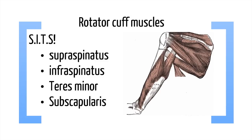The best mnemonic to memorize is SITS. There are four main muscles: supraspinatus, infraspinatus, teres minor, and subscapularis. We're going to go through each muscle using the structure that I proposed in the previous slide.